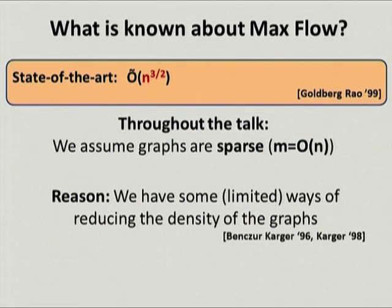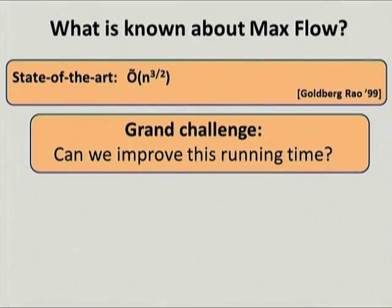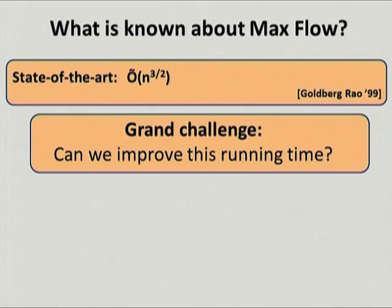Once we focus on sparse graphs, the running time of Goldberg-Rao is just n to the three-halves times a polylogarithmic factor. One of the most important questions in algorithmic graph theory today is whether we can improve this running time—can we compute maximum flow in sparse graphs in time faster than n to the three-halves? Despite much effort, there has not been much progress on this question.